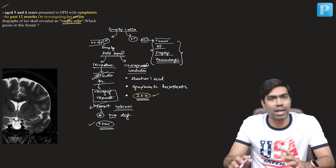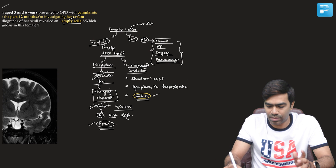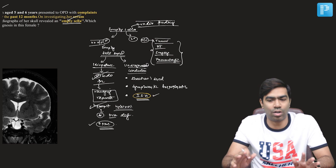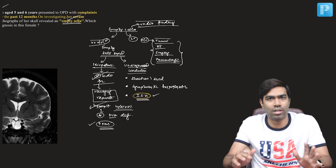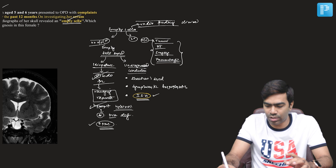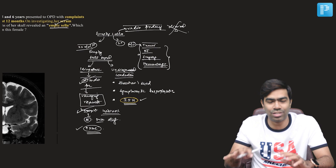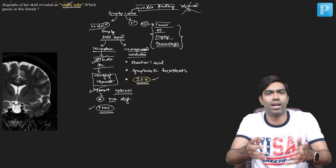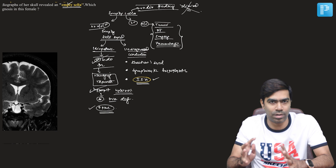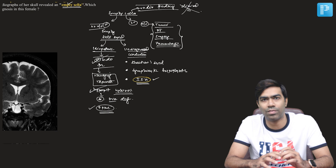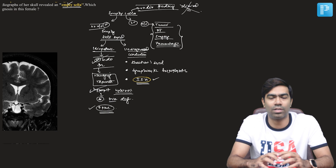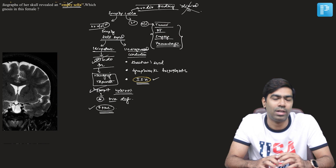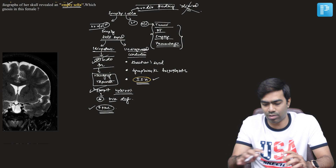Remember that empty sella is a radiological finding — that is it. Whether you call it a syndrome or not is highly controversial, but empty sella is just a radiological finding; it is not a clinical diagnosis. That is why the controversy exists even now. If you have a clinically compatible history, you can make a diagnosis of secondary empty sella. If you do not have any clinically compatible history for the loss of pituitary in the sella, you make a diagnosis of primary empty sella, and if it is truly idiopathic you can call it primary empty sella syndrome.